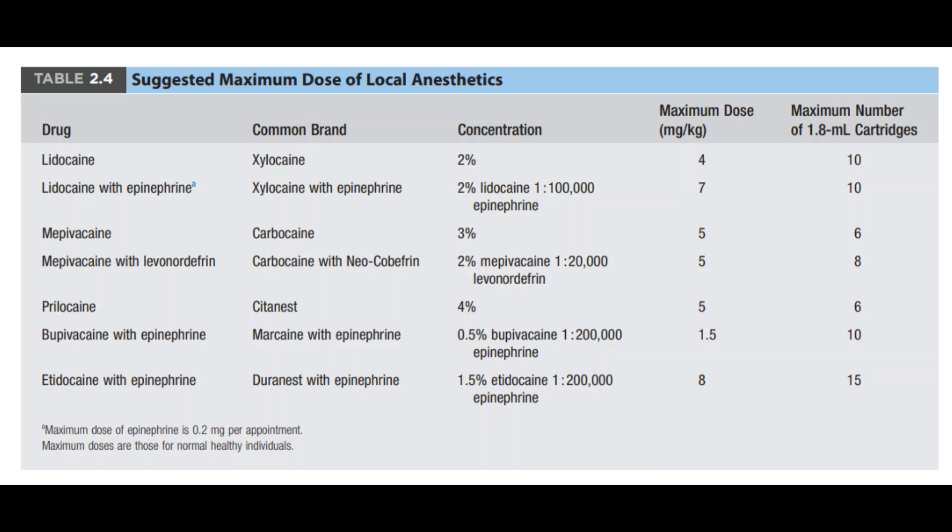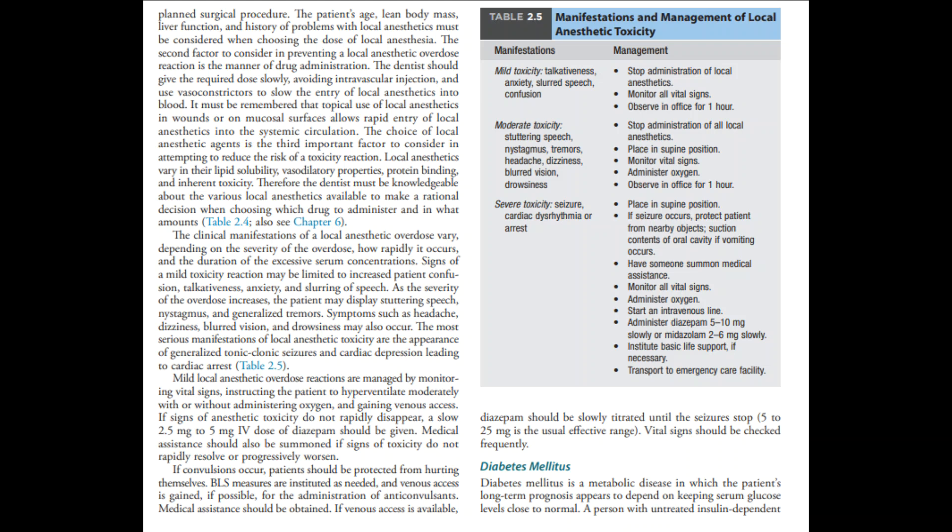You need to know the dose calculation, the patient's age and body mass, any systemic problems such as liver disease or allergies, and the manner of drug administration. The protocol requires aspiration before injection — if you aspirate and get blood in the cartridge, the needle is intravascular and you must not inject. Reposition the needle where no blood appears before injecting.